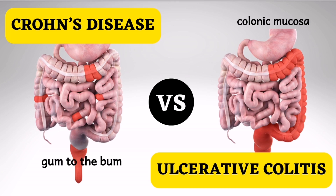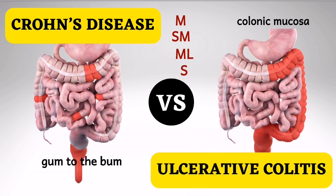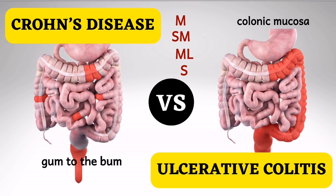Remember from basic anatomy that the walls of the GI have basically four layers: the mucosa, which is the innermost layer; the submucosa; the muscular layer; and then the adventitia or the serosa. Whereas ulcerative colitis chiefly affects the mucosa, the inflammation of Crohn's is transmural — it affects all four layers of the bowel — whereas ulcerative colitis is chiefly limited to the mucosa, the most inner layer.